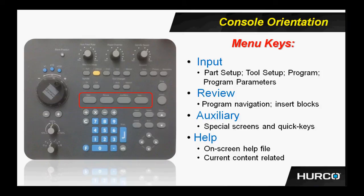Next to the auxiliary, we have the help button. The help button is going to bring up an on-screen help file that should be content specific to whatever it is that I'm trying to do at that moment. If I am trying to do a mill frame block and I depress the help, it should bring up a portion of the help menu that applies to mill frame. If it doesn't, there is a search field where I can search by keyword for any of the information I'm looking for.